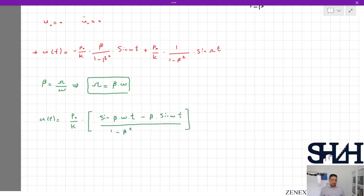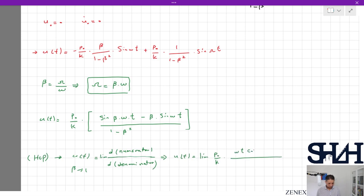And if beta tends to move towards one, then we can use L'Hospital's principle. Then u(t) when beta tends to be one will be the derivative of the numerator divided by the derivative of the denominator. So u(t) will be p₀ over k times ωₙt·cos(β·ωₙ·t) minus sin(ωₙt) divided by minus 2β.